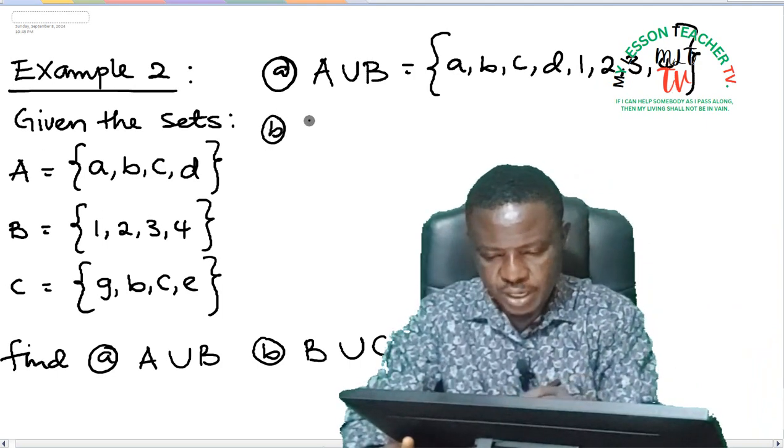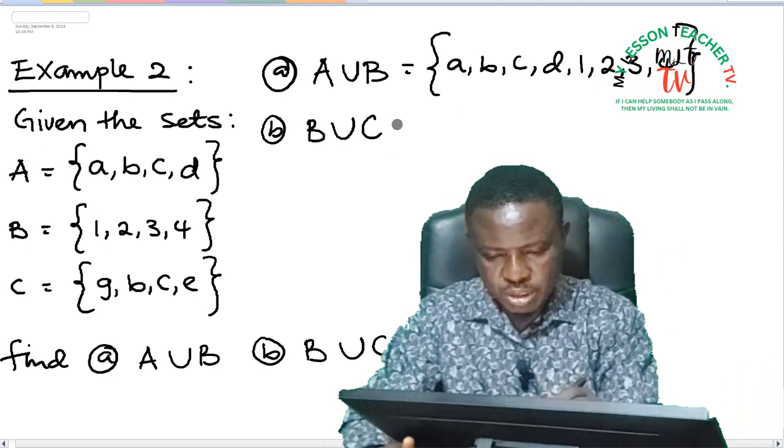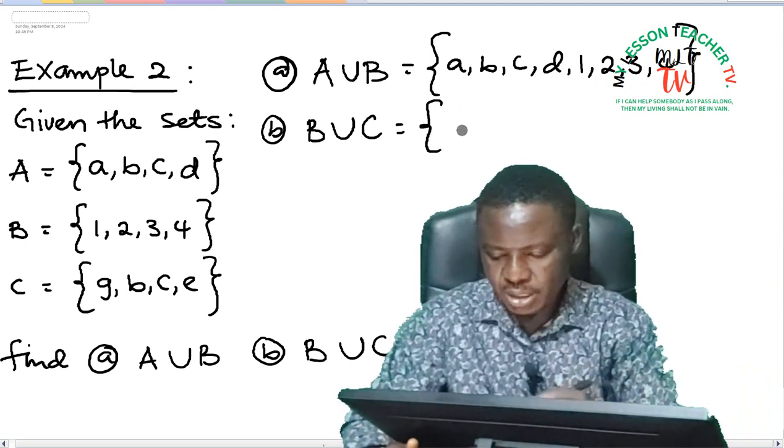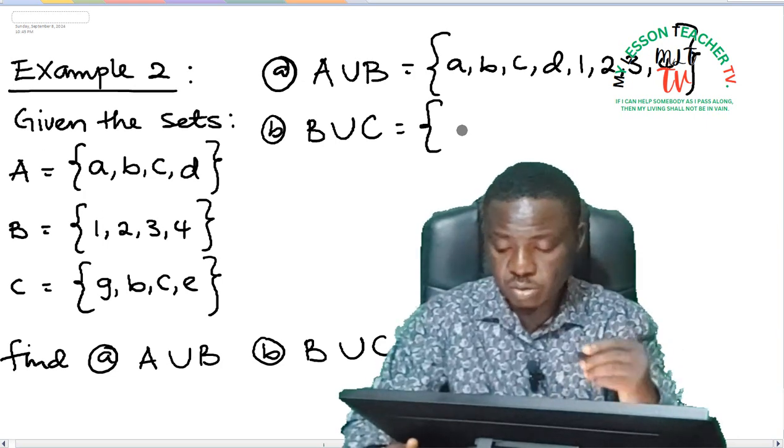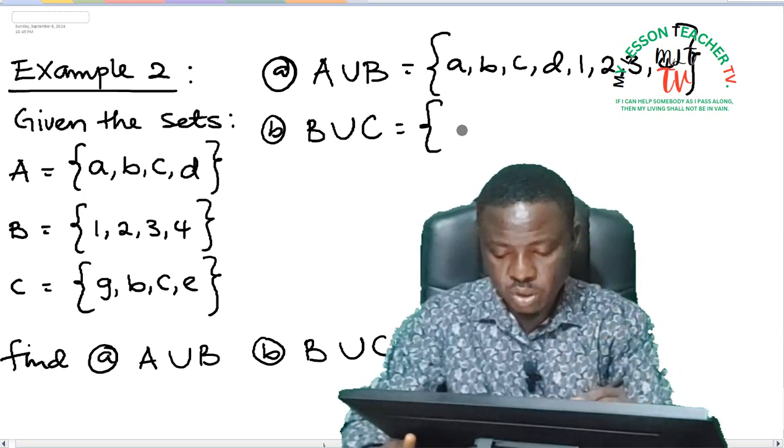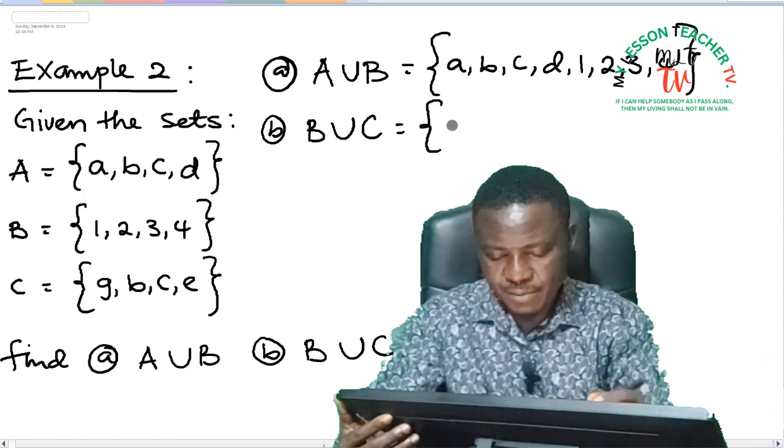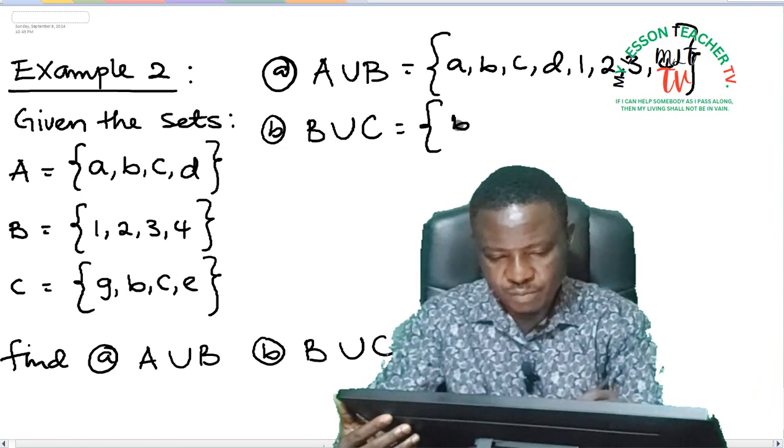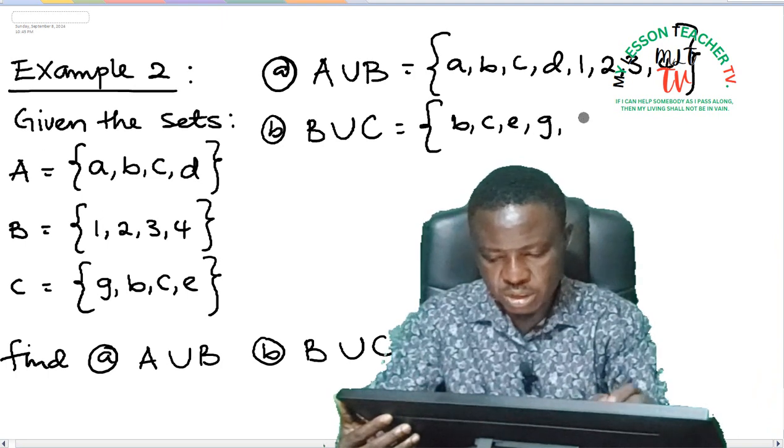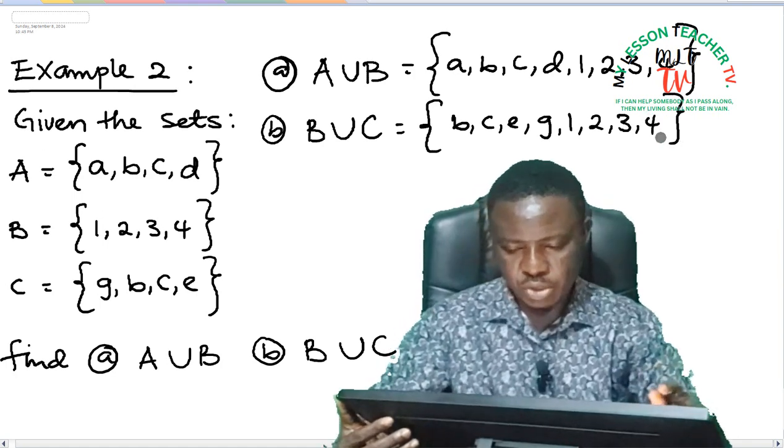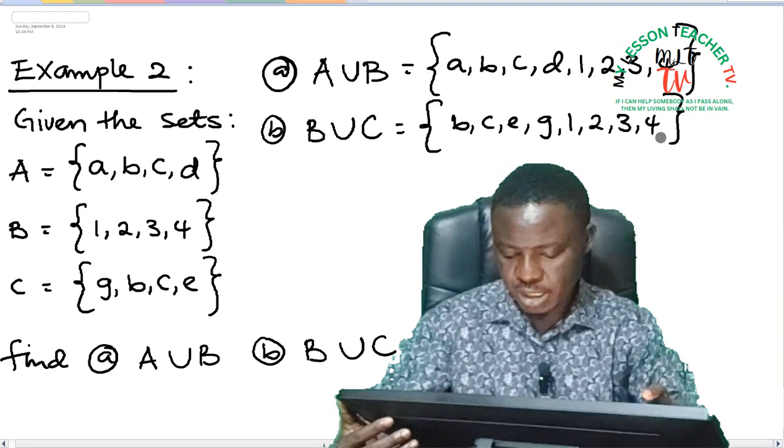B says we should find B union C. This means you have to add all the element in B plus all the elements in C without repetition. Since it's alphanumerical, I'm going to write them in ascending order. We have {b, c, e, g, 1, 2, 3, 4}. So this is the union of B and C.